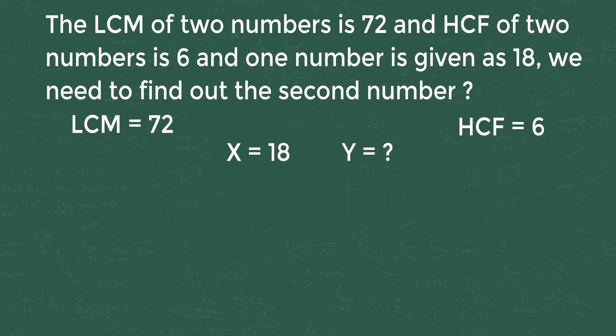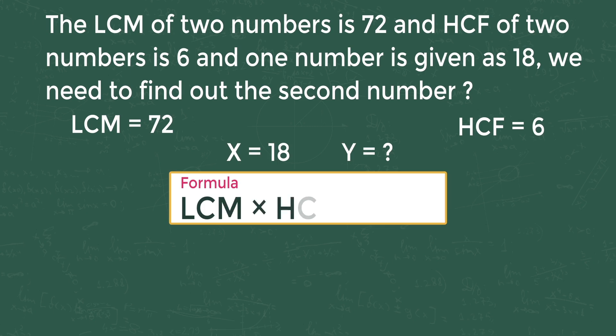We can apply the formula here. That is, LCM times HCF equals x times y. So 72 times 6 equals 18 times y. Y equals 72 times 6 divided by 18.